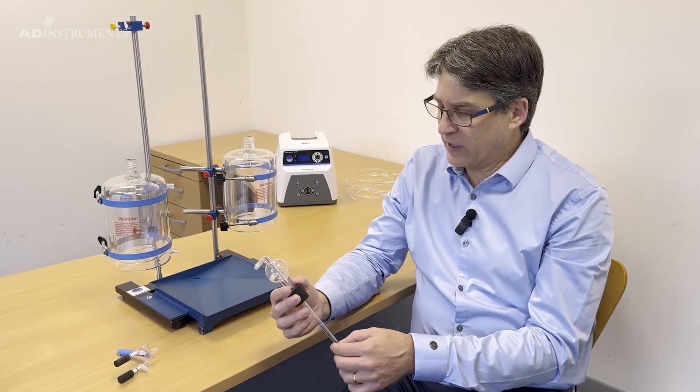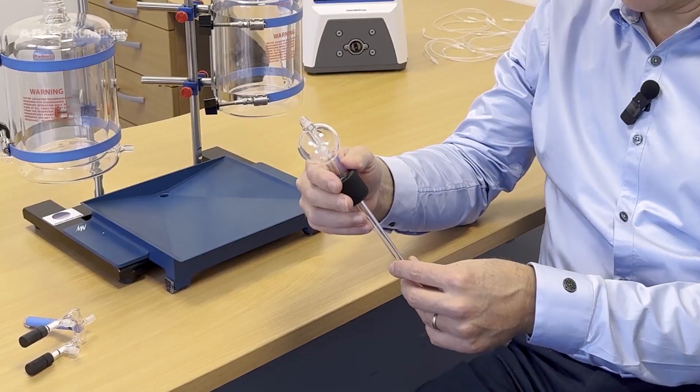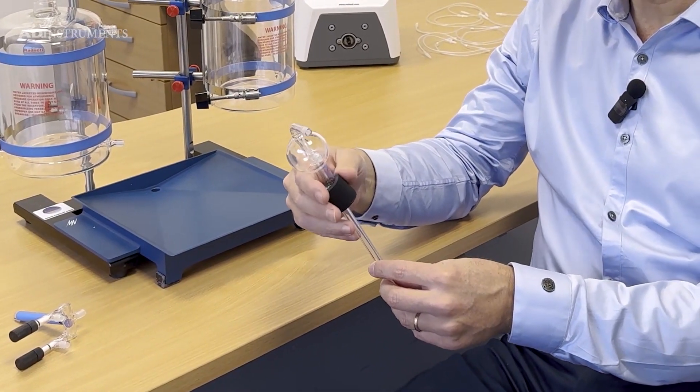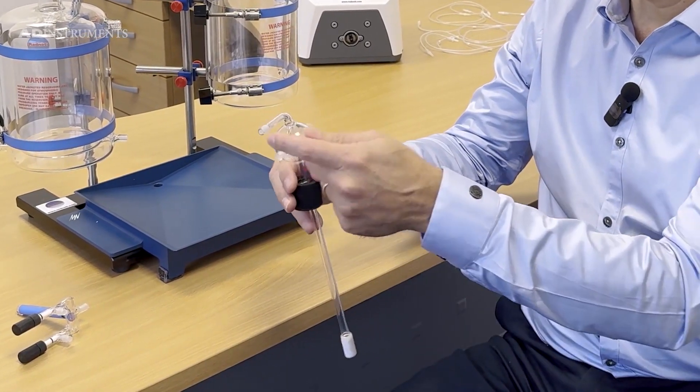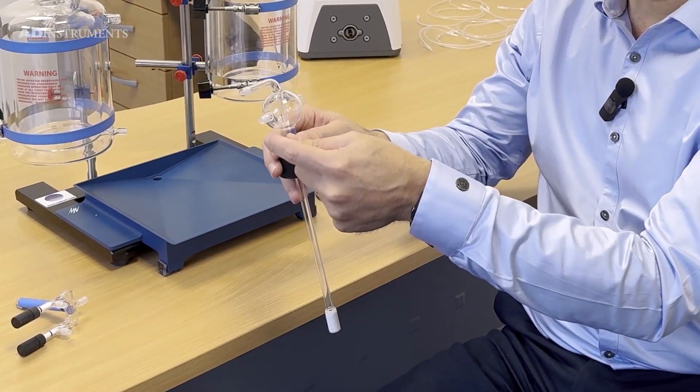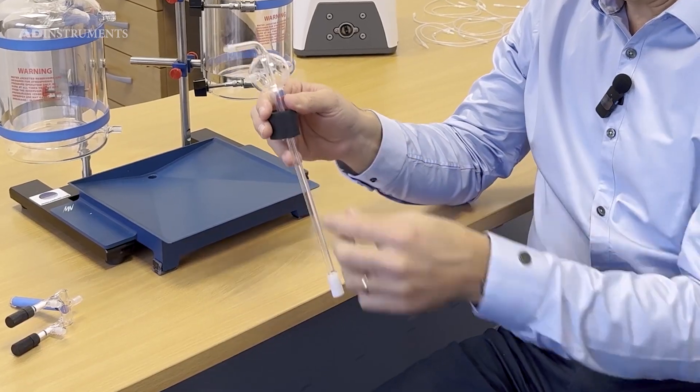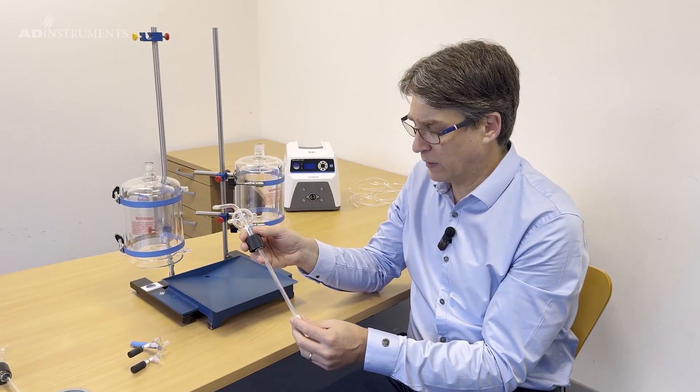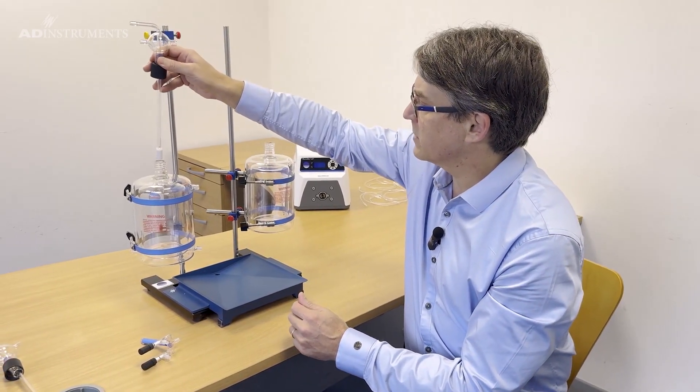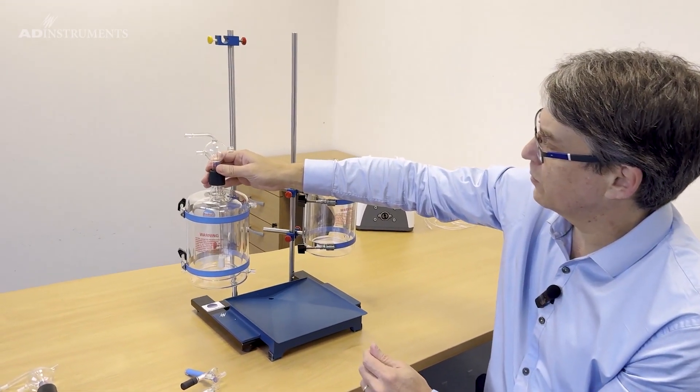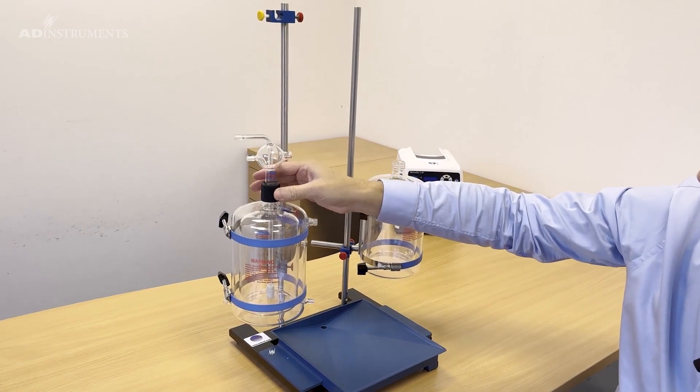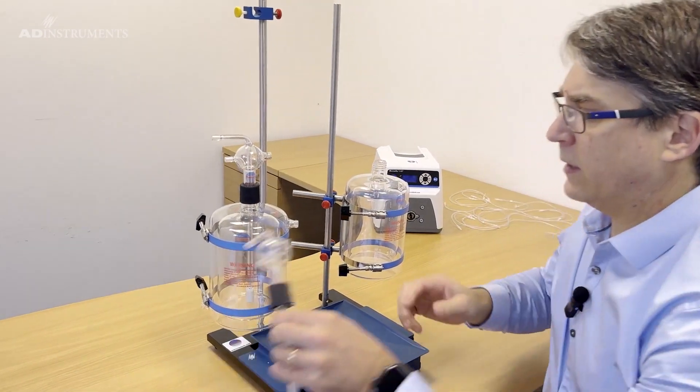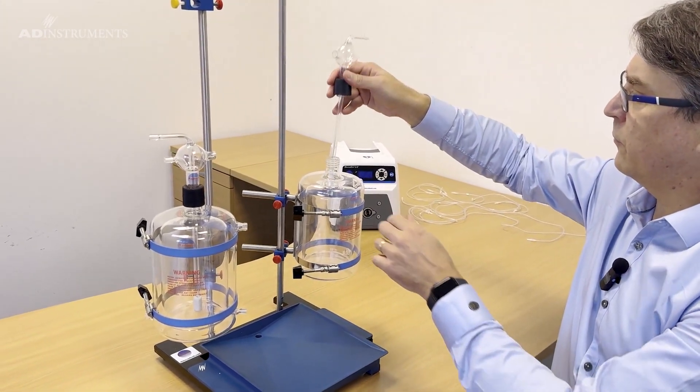The next component is the gas bubblers. This supplies carbogen to the perfusate, so the gas inlet is over there. This is an overflow inlet and it consists of a glass frit at the bottom which produces really small bubbles, so we can just place this inside the perfusate reservoir.